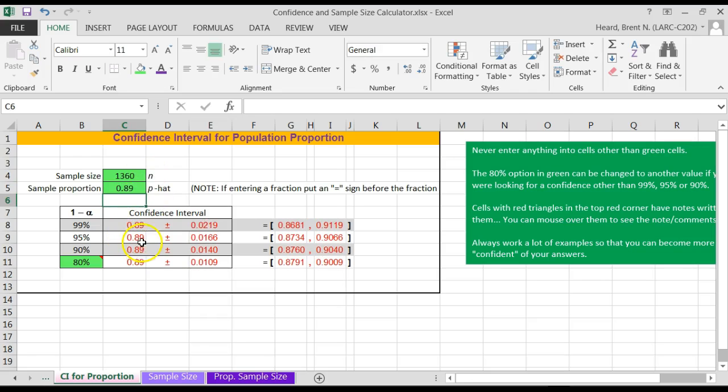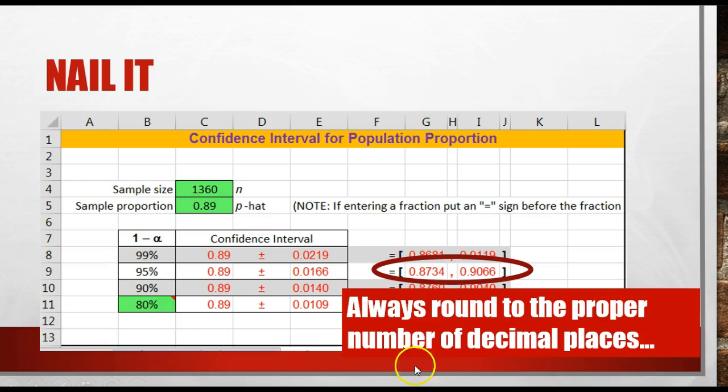The 95% confidence interval would be 0.8734 to 0.9066. We nailed it. Just remember to round it. So we've got the 99, the 95, the 90. And just like the others, if I wanted a different confidence level other than 99, 95, or 90, I could enter it right there. But we nailed that one.